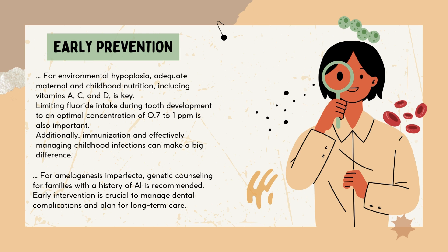For environmental hypoplasia, adequate maternal and childhood nutrition including vitamins A, C, and D is key. Limiting fluoride intake during tooth development to an optimal concentration of 0.7 to 1 part per million is also important. Additionally, immunization and effectively managing childhood infections can make a big difference. For amelogenesis imperfecta, genetic counseling for families with a history of AI is recommended. Early intervention is crucial to manage dental complications and plan for long-term care.